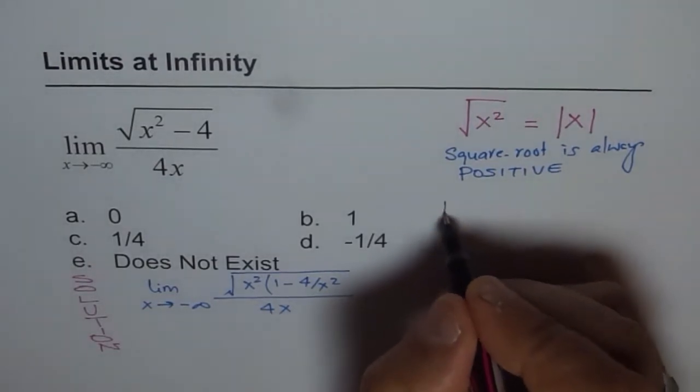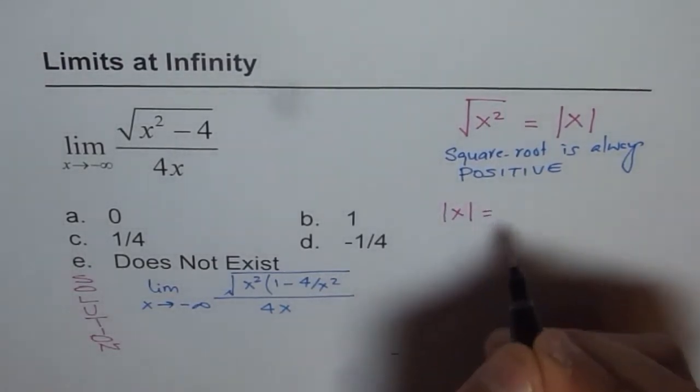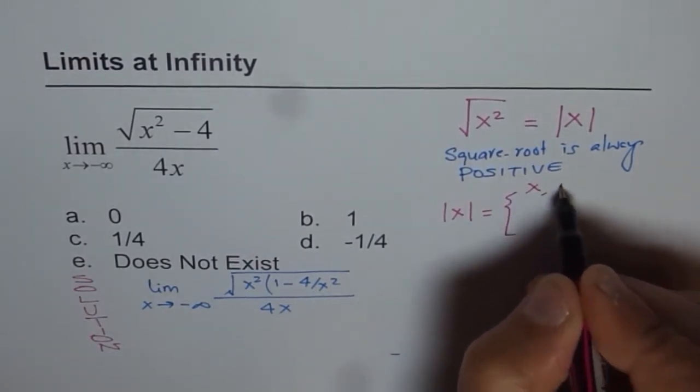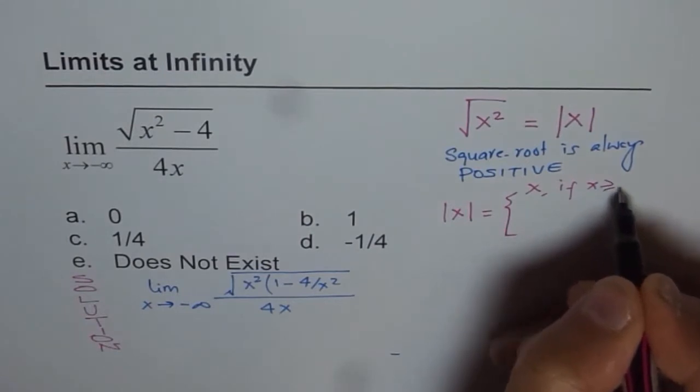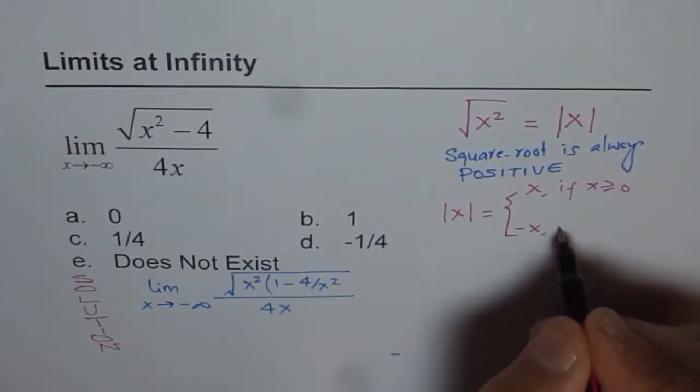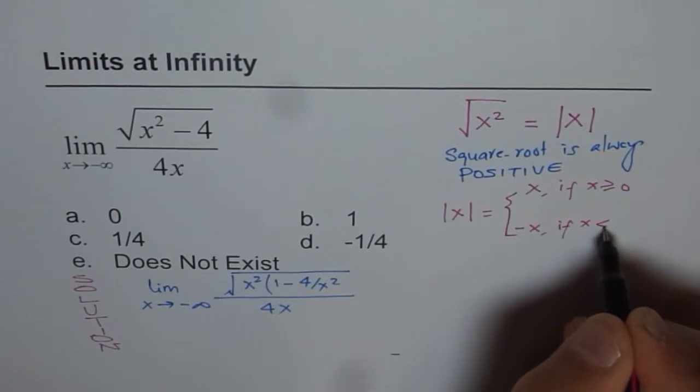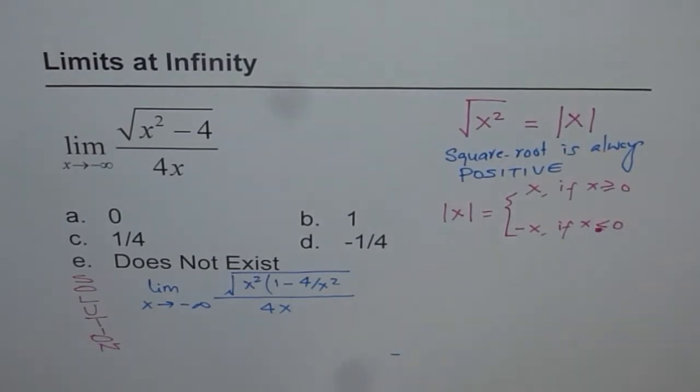Now, how is absolute x defined? That is the second part to understand. Absolute x equals x if x is greater than or equal to 0, but it equals minus x if x is less than 0.